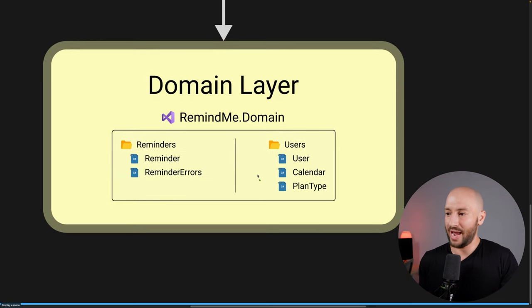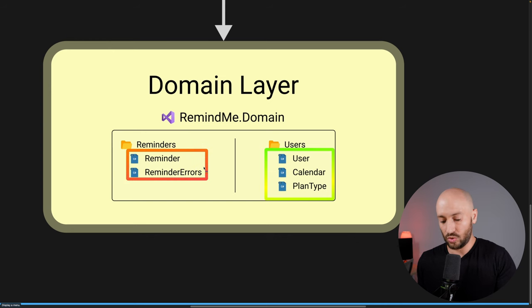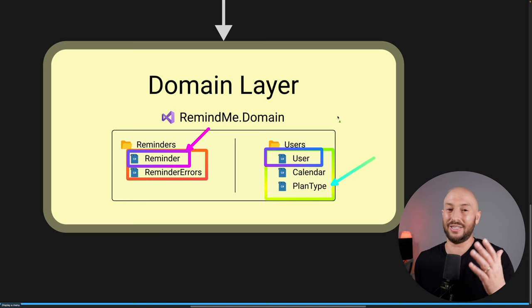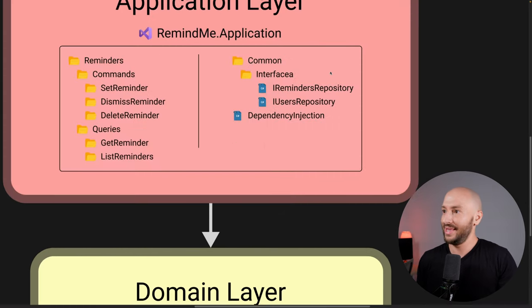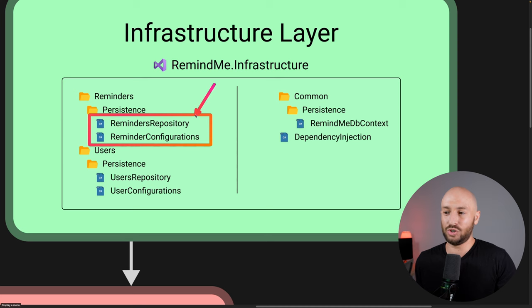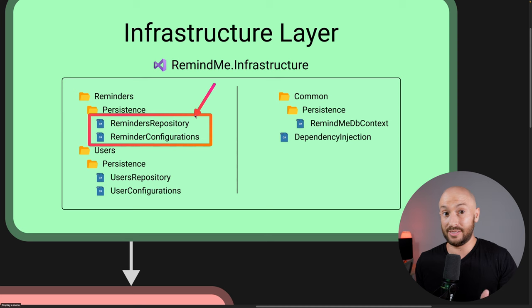In the domain layer we have the actual objects — the user, the reminder — and the business logic and rules. For example, when we create a new reminder, we add the reminder object to the user object, and there might be an if statement that checks the plan type to see if the user can create this reminder. Finally, the infrastructure layer contains the actual implementation of how to access the database, as well as other infrastructure concerns like interacting with the file system, the system clock, etc.